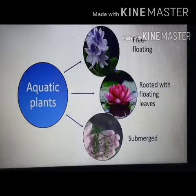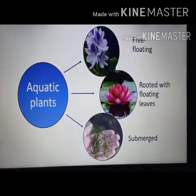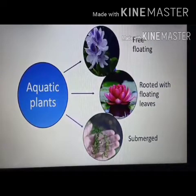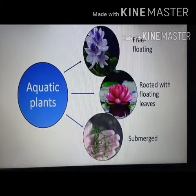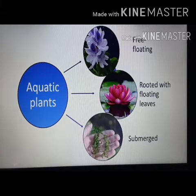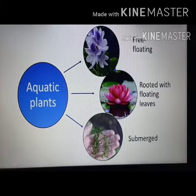Now we'll talk about aquatic plants and animals. First, we will take aquatic plants. Plants that live in water are called aquatic plants. There are mainly three types: free floating plants, rooted with floating leaves, and submerged plants.